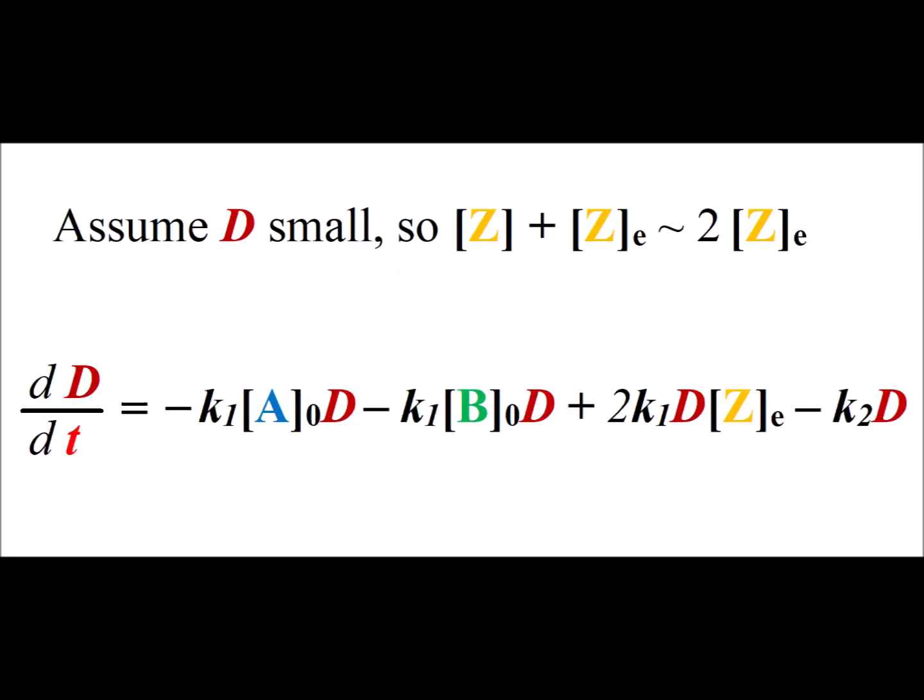If we assume that we are close to equilibrium, then D is going to be small, so we replace z plus z sub e by two times the equilibrium concentration of z, and then we substitute it into our expression for dD/dt.